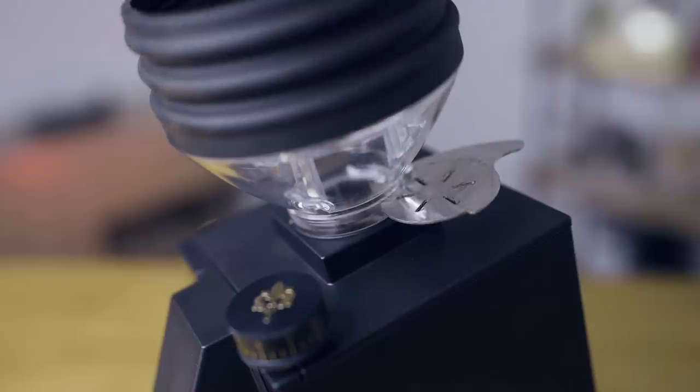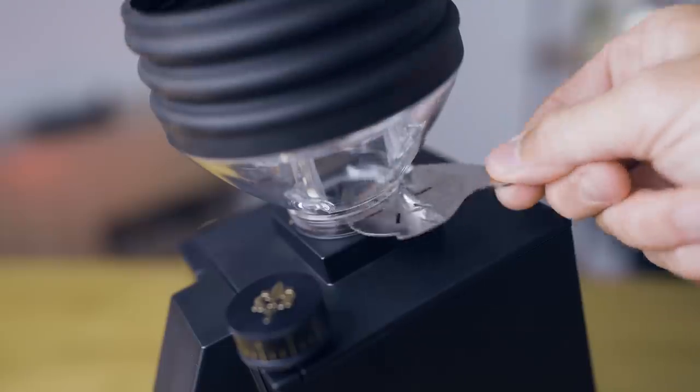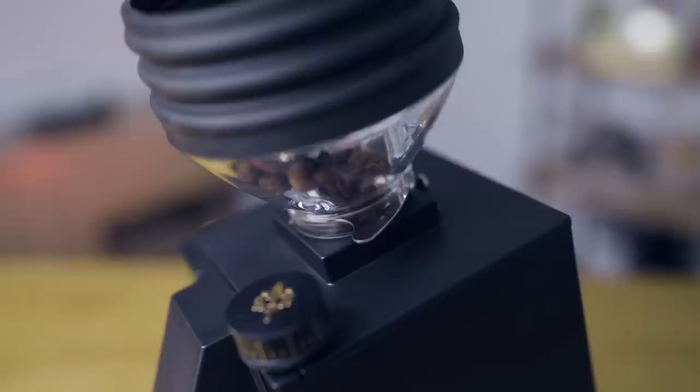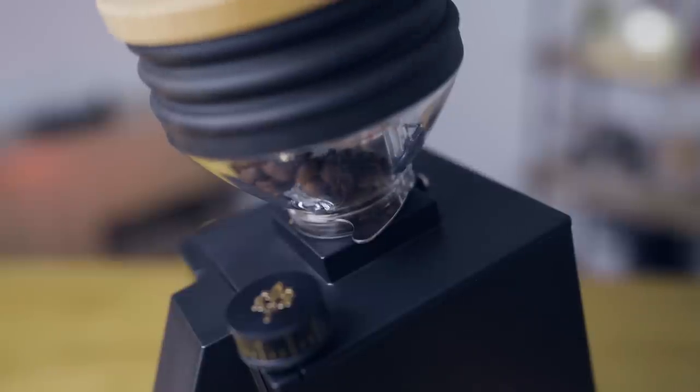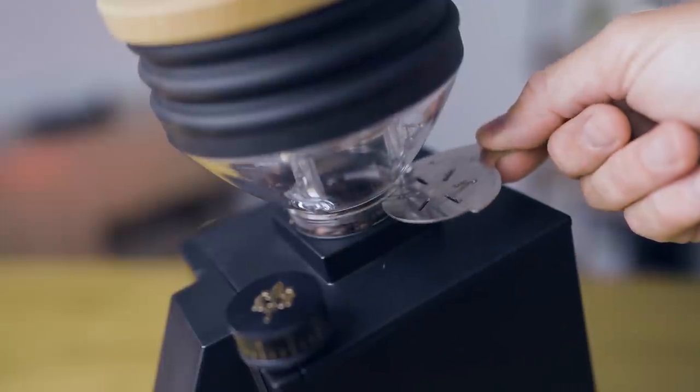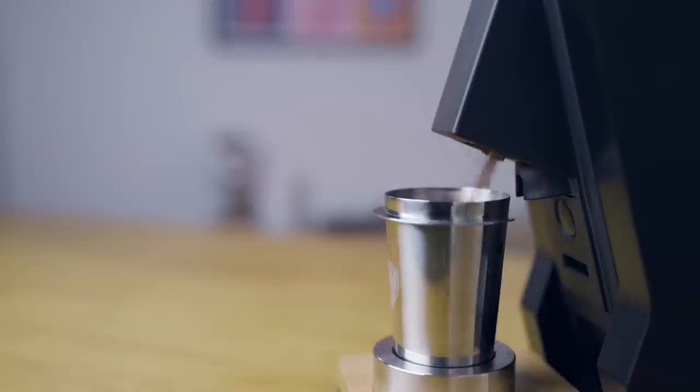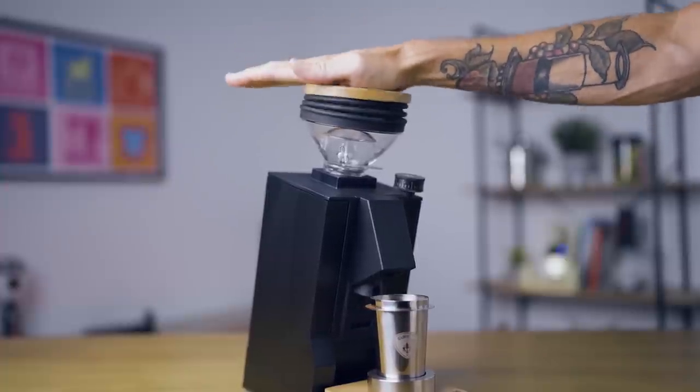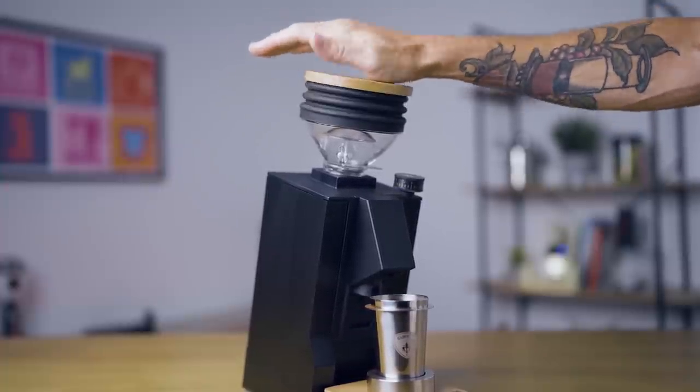A recommendation when single dosing with the Eureka is to keep the hopper gate shut until you add your beans, then have the grinder turned on and the motor spinning before you open that gate and let the beans drop into the moving burrs. This is not an uncommon practice with many single dosing grinders.